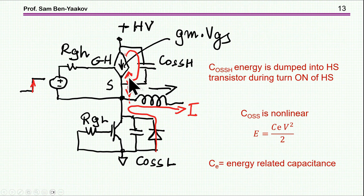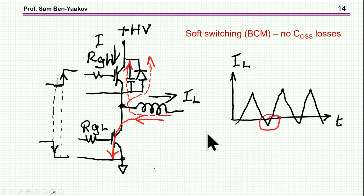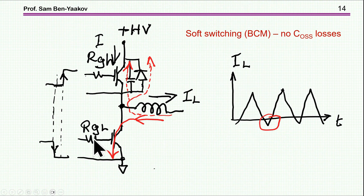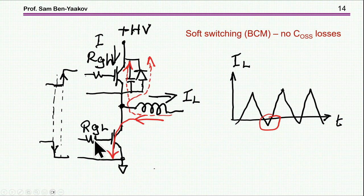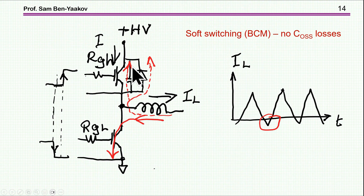If, however, the operation is in soft switching, like in BCM, then we have a reversal of the current, which means that when the lower transistor is on, the current at this point is actually going in the reverse direction — not through the diode as in hard switching, but through the transistor itself. So when this transistor is turned off, there is a self-commutation, very similar to what we have seen for the upper transistor at turn-off. This will cause the discharging of this capacitor in a lossless way. In this case, the energy in the two capacitors is being recycled. This is one big benefit of soft switching.